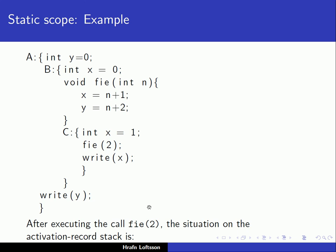To locate the correct activation record containing the memory for a non-local variable, we need to go through the static chain pointer. The static chain pointer for function phi points to the activation record for block B, and B has a static chain pointer pointing to block A. When we're inside the call to procedure phi, the memory associated with variables x and y is found by following the static chain pointer. Variable x is in the activation record for B, and variable y is kept in the activation record for A.